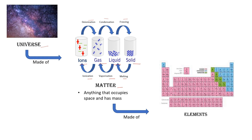Solid has a definite shape — its particles are very closely packed. When we compare it with liquid, liquid can flow easily, meaning the particles of liquid are not so closely packed as solid. Gas can spread more easily, meaning the particles of gas are more loosely packed compared to liquid. In solid, particles cannot move freely; in liquid, particles can move freely moderately; but in gas, particles can move freely very easily.